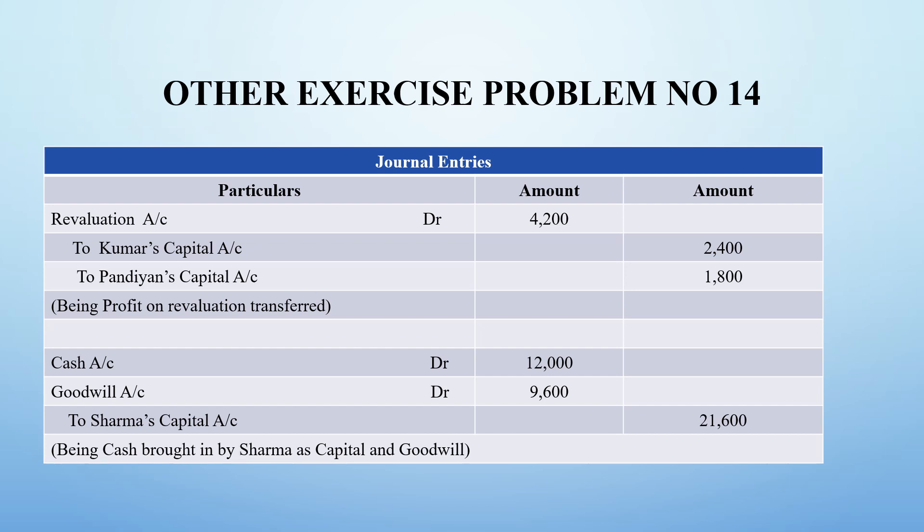Sharma, the third partner, has entered into the business by bringing in cash and goodwill. Cash and goodwill are coming into the business from Sharma — that is ₹12,000 capital plus ₹9,600 goodwill, totalling ₹21,600.